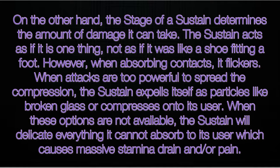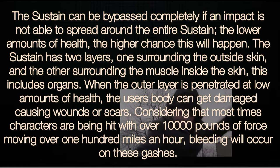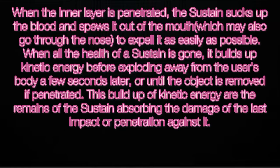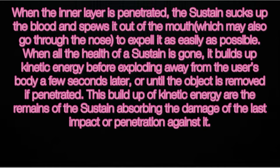The sustain can be bypassed completely if an impact is not able to spread around the entire sustain; at lower amounts of health, this is more likely to happen. The sustain has two layers: one surrounding the outside skin and one surrounding the muscle inside the skin, including organs. When the outer layer is penetrated at low health, the user's body can get damaged causing wounds or scars. Given that most times characters are being hit with over 10,000 pounds of force moving at over 100 miles an hour, bleeding will occur on these gashes. When the inner layer is penetrated, the sustain sucks up the blood and spews it out of the mouth — which may also go through the nose — to expel it as easily as possible.